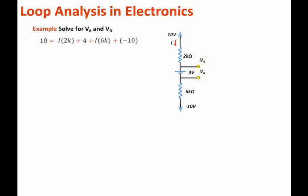The voltage at the top equals the sum of the voltage drops plus the remaining voltage at the bottom. Taking the 4 volts and the negative 10 volts to the other side and grouping the I terms together, we have 16 equals 8k times I. Solving for I gives us 2 milliamps.